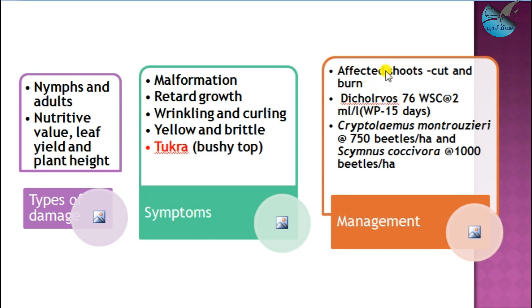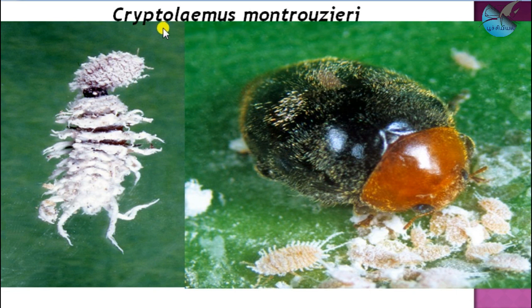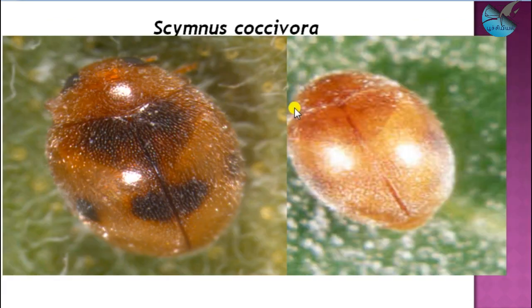For management, starting with cultural practice: if in fewer isolated locations, we cut the affected area and remove it. If the population is more, we go for chemical spraying. For biological control, Cryptolaemus montrouzieri, commonly called the mealy bug destroyer, is used at 750 beetles per hectare, or Scymnus coccivora, a mealy bug feeding coccinellid insect, is used at 1000 beetles per hectare. Both the adult and grub forms feed on mealy bugs, effectively controlling the population.